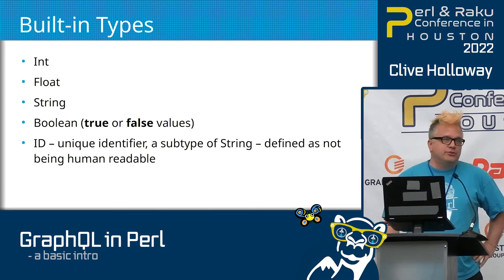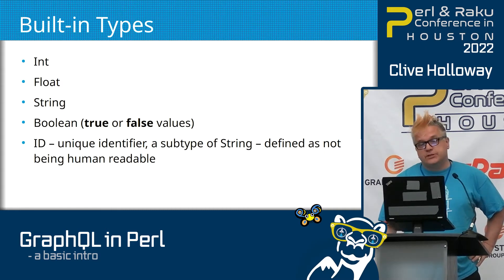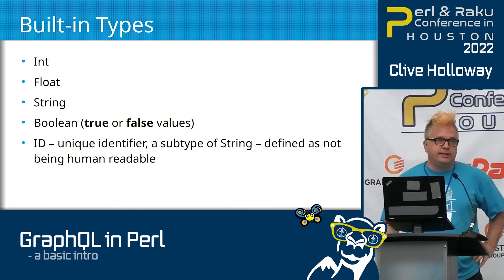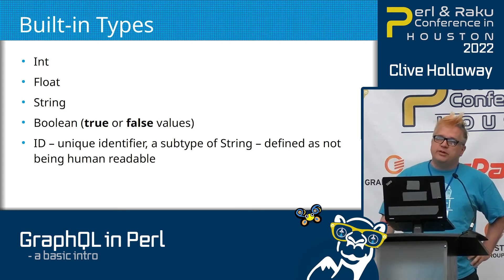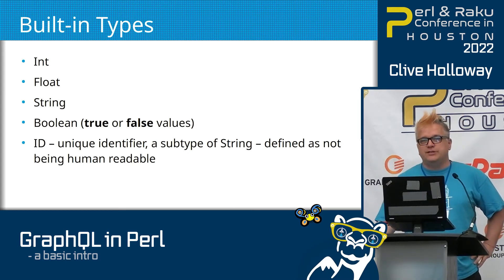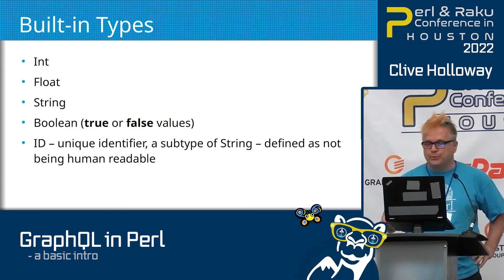There are only five built-ins — technically four, plus ID. They should be familiar and don't really need much explanation. It says the ID is not intended to be human-readable, but in the examples I've seen, people do tend to use it. Think of it basically as a primary key if you're coming from the RDBMS world.